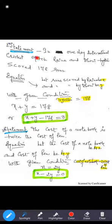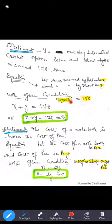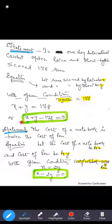Second statement: In a one-day international cricket match, Rena and Dhoni together scored 178 runs. The unknown terms are runs scored by Dhoni and Rena. Let the runs scored by Rena be x and runs scored by Dhoni be y. Together means their sum, so x + y = 178, or in the form of a linear equation: x + y minus 178 is equal to 0.